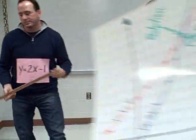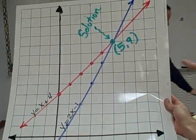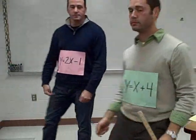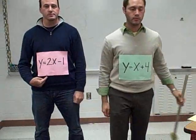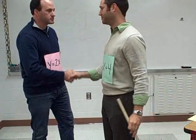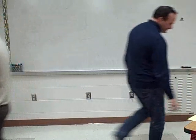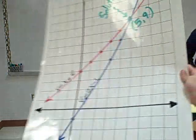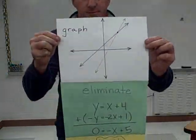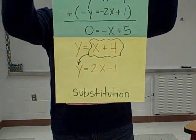Find the solution for the system: take two linear equations and solve what is both true and in common. It's where they cross — the shared solution is a coordinate or ordered pair. To graph, eliminate, or use substitution.